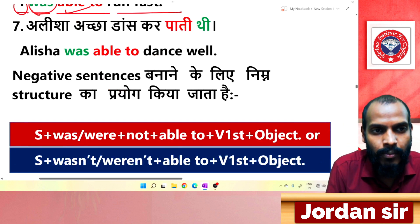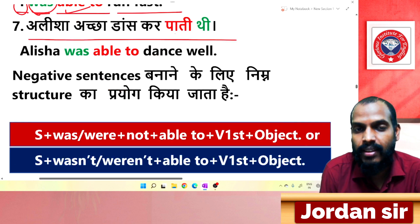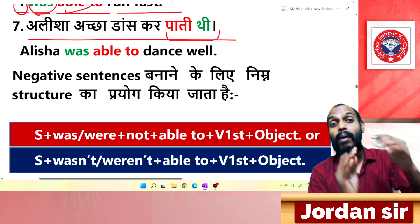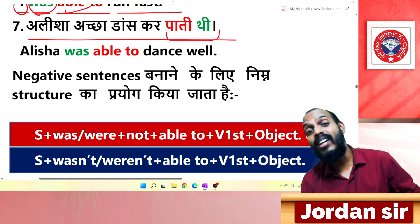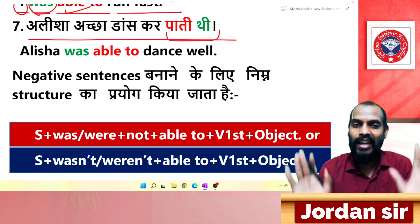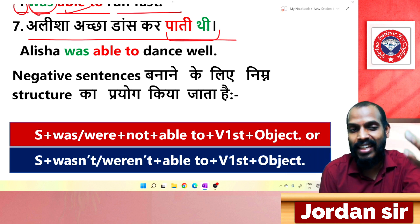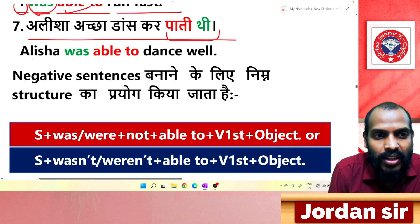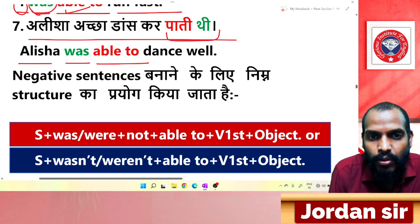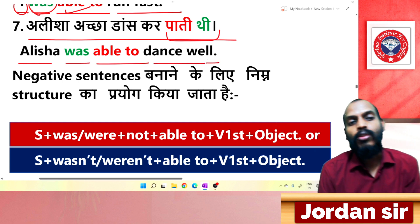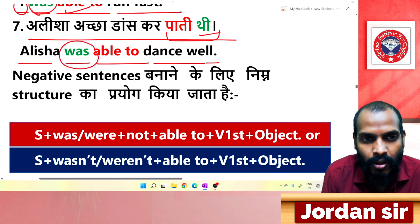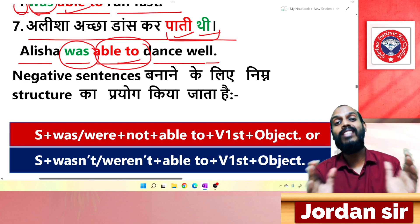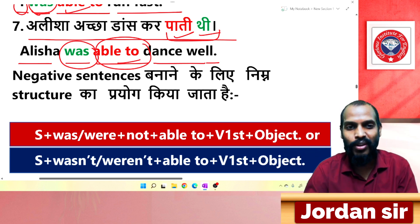Next example involves Alicia having the ability to dance. Translation: 'Alicia was able to dance well.' From 'थी' comes 'was', and from 'पाती' comes 'able to'. So: Alicia was able to dance well.